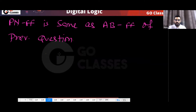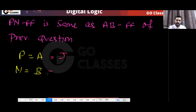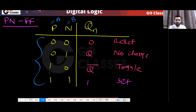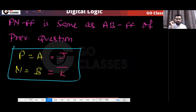So finally, this PN flip-flop is the same as the A-B flip-flop of the previous question. This P is same as A, and this N is same as B. In that question, A was same as J and B was same as K-bar. So here, P will be same as J and N will be same as K-bar.